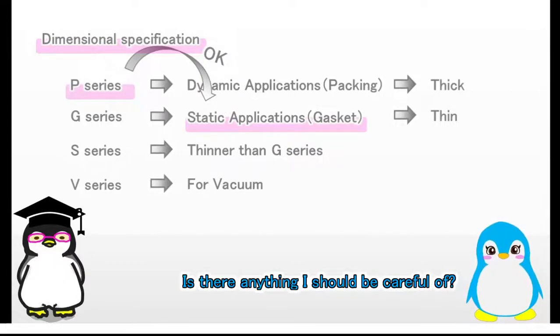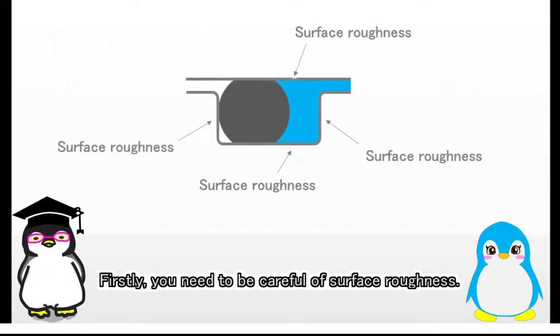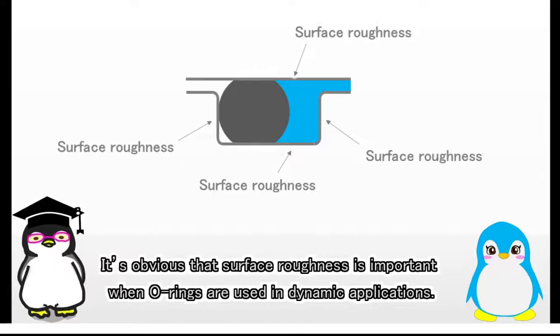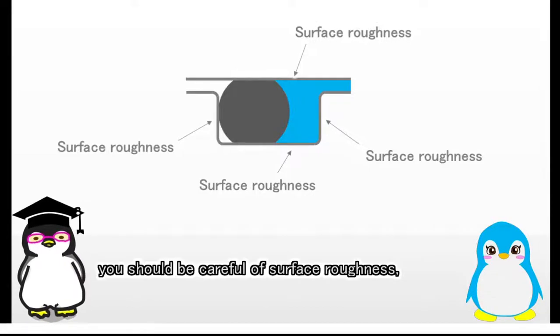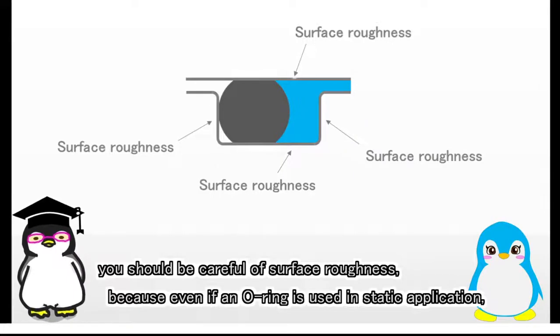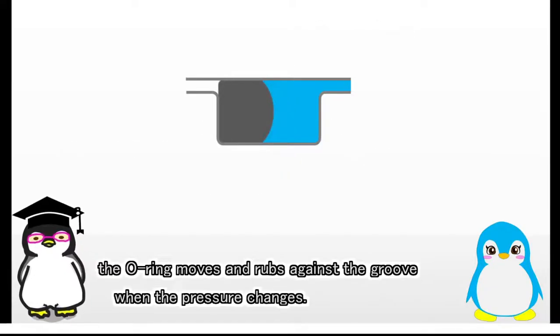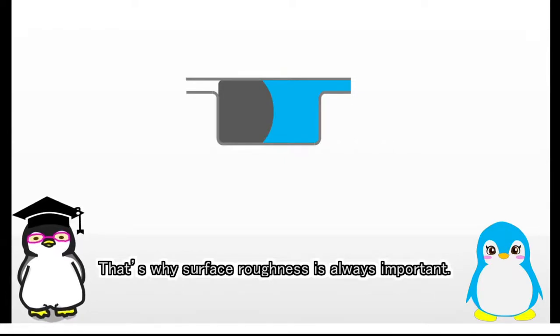Is there anything I should be careful of? Firstly, you need to be careful of surface roughness. It's obvious that surface roughness is important when O-rings are used in dynamic applications. However, even when O-rings are used in static applications, you should be careful of surface roughness, because even if an O-ring is used in static application, the O-ring moves and rubs against the groove when the pressure changes. That's why surface roughness is always important.